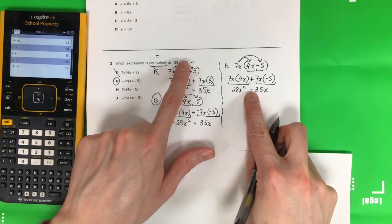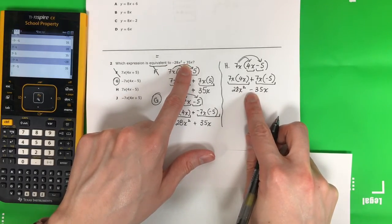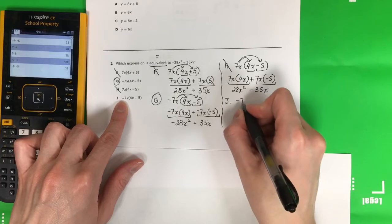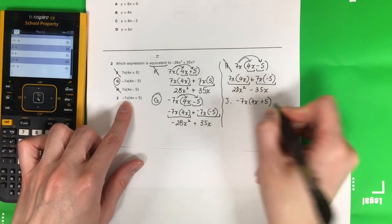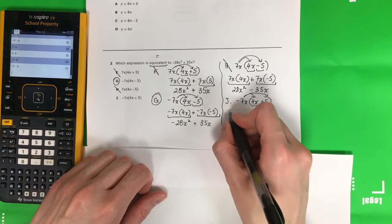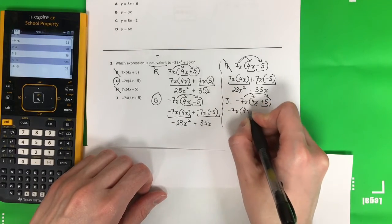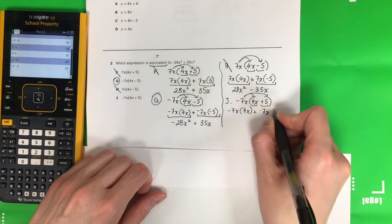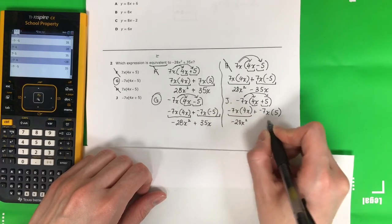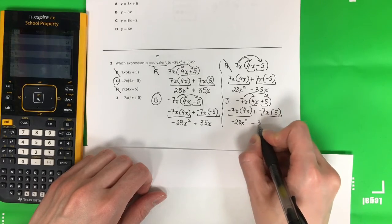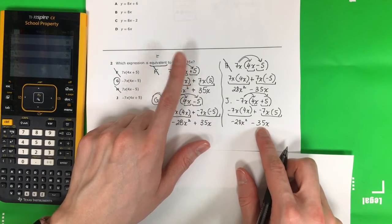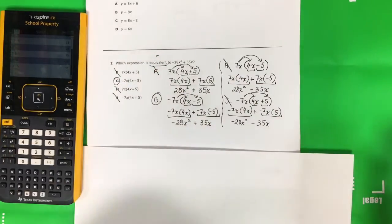Now j is negative 7x plus 5, with two terms inside: negative 7x times 4x and negative 7x times positive 5. So negative 7x times 4x plus negative 7x times 5 gives negative 28x squared, and negative 7 times 5 is negative 35x. Is this equivalent? No, because this is negative 35 and in the original it's positive 35. So that's not the answer. My answer is g.